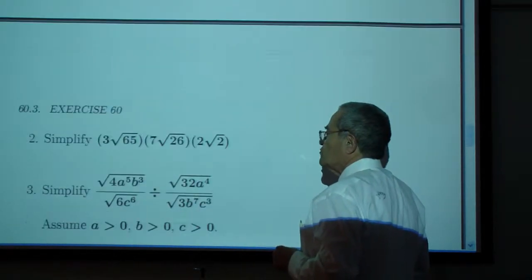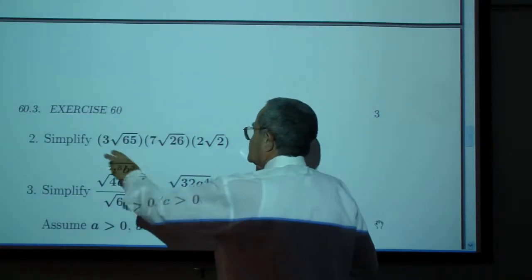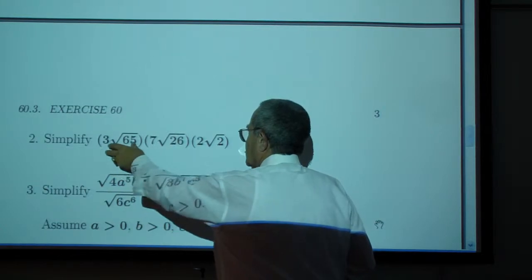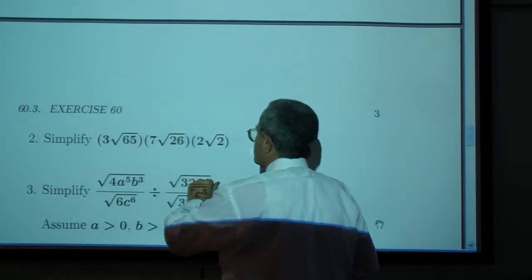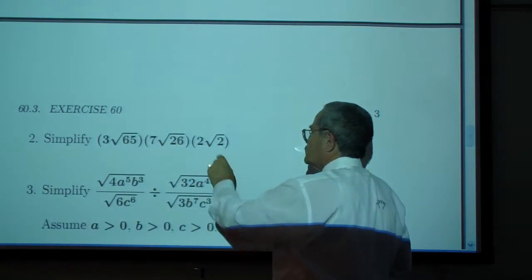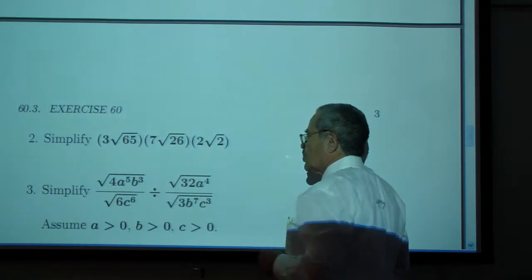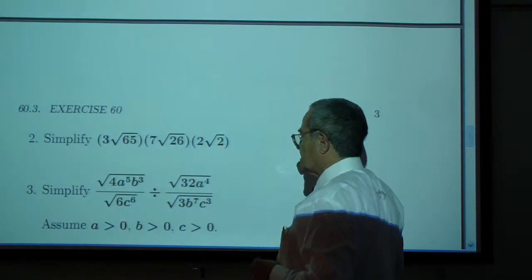2. Simplify 3 times square root of 65, times 7 square root of 26, times 2 square root of 2.